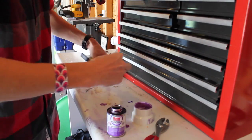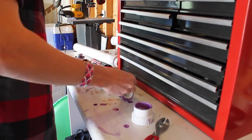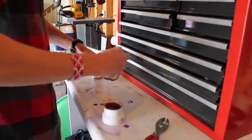Cementing the two pieces together is the same as the process we used earlier. Apply the primer first, then a liberal amount of the cement.